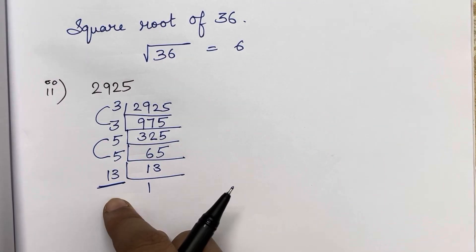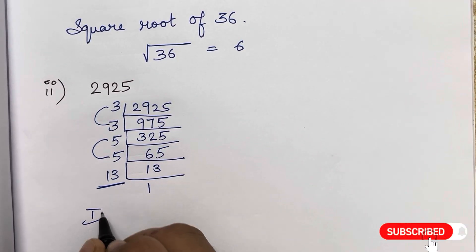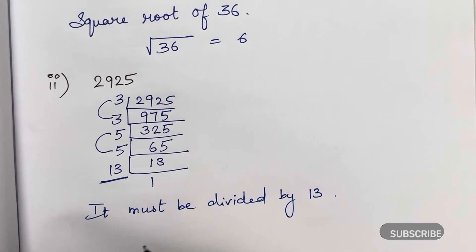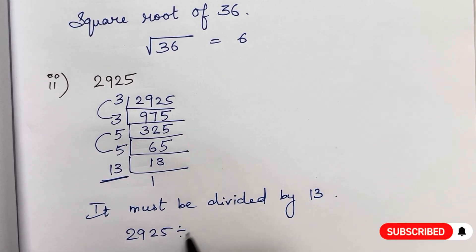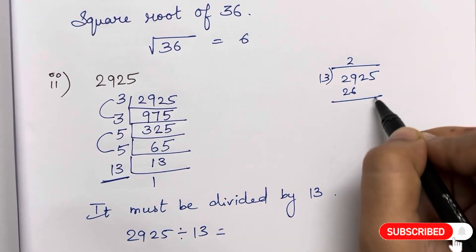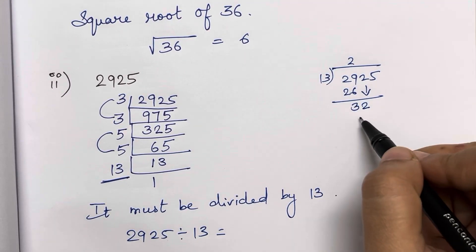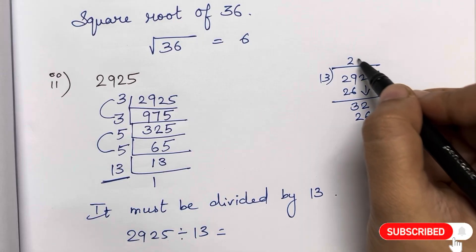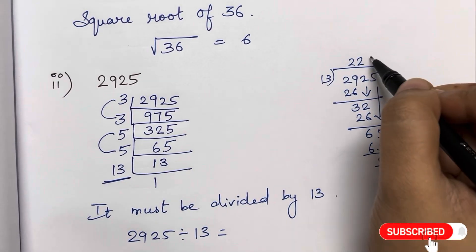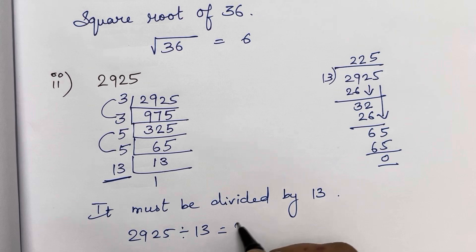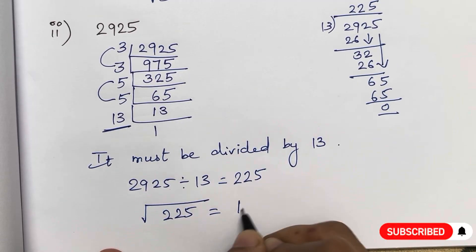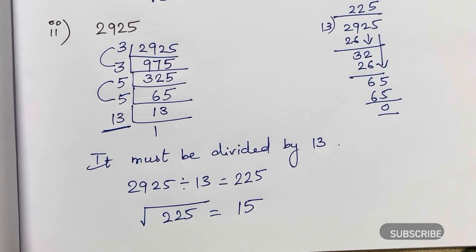So 2925 must be divided by 13 to get a perfect square. 2925 divided by 13 is 225. And the square root of 225 is 15, because 15 times 15 is 225.